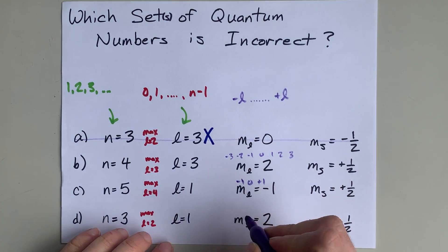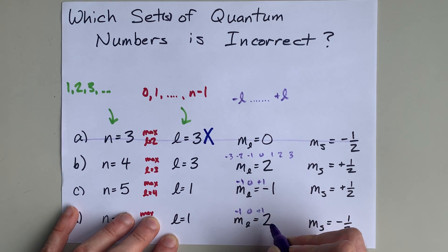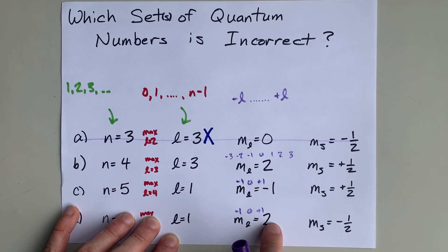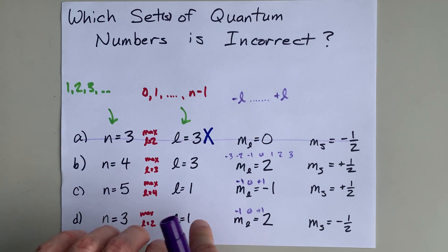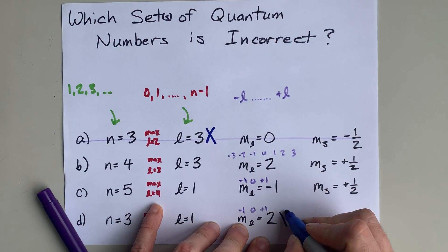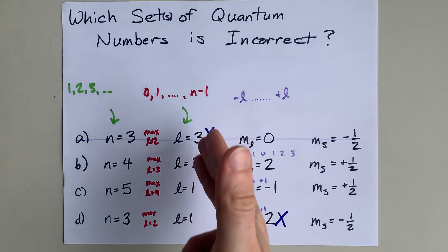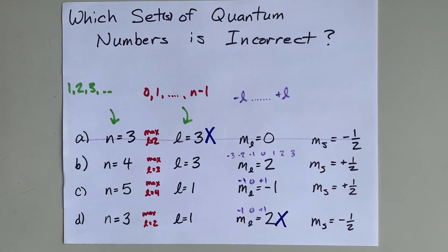When L is 1, ML is allowed to be negative 1 or 0 or positive 1, but it cannot be beyond what L actually is. That means this ML is not allowed for that L. So we already have two sets of quantum numbers that are incorrect here.